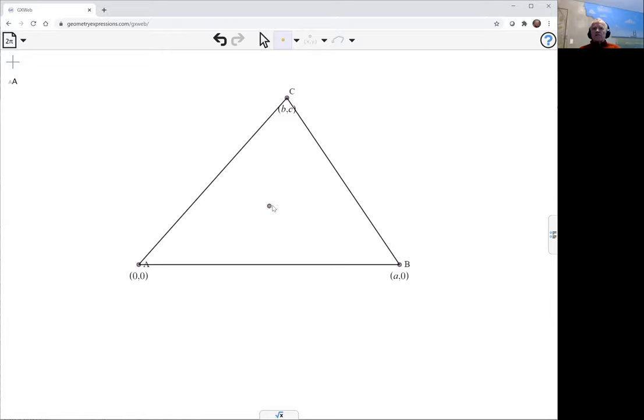But in this example, it's pretty useful to do by coordinates because now D is an arbitrary point inside the triangle. So I can just give that coordinates X, Y. So it's an arbitrary location.